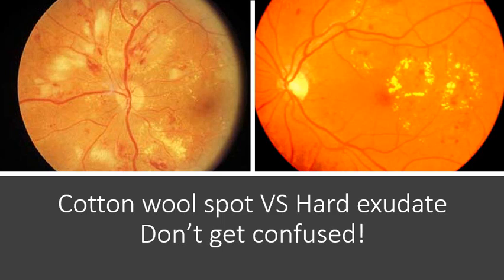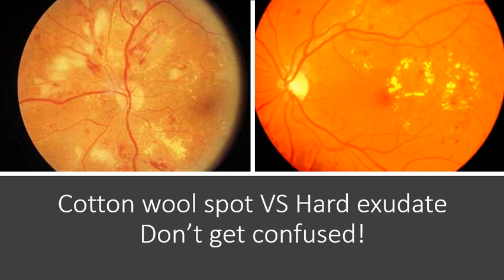It's important not to confuse hard exudates with cotton wool spots. Hard exudates are made up of lipids, are very yellow in color, often found close to the macula, have distinct margins, and result from blood vessel leakage. Cotton wool spots, on the other hand, are made up of axonal debris, are more prominent around the optic nerve, are lighter or white-yellow colored, have billowy cloud-like margins, and result from vessel occlusion.